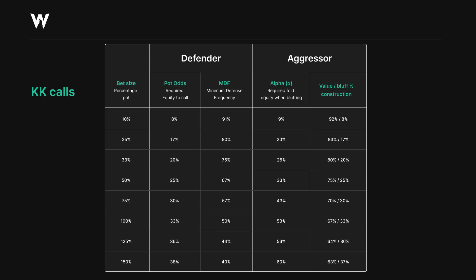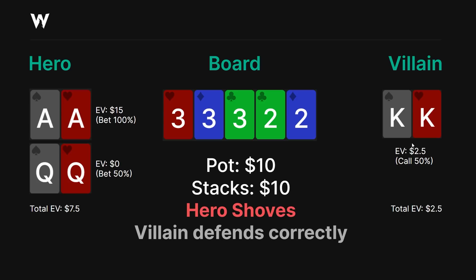The value-to-bluff construction for a pot-sized bet is 2/3 value, 1/3 bluff — exactly what we have here. How does that play out? Hero's aces will always bet, so the expected value is the pot plus half of villain's stack because they call half the time: 10 plus 5 equals $15. Queens will win half the time and lose half the time when they bet, and always lose when they check back. Queens' expected value is $0. The total expected value, averaging these out, is $7.50. King-king facing a bet is $0. However, kings always wins when we check back with queens — since we check back 25% of our range, kings wins $2.50, or 25% of the pot.